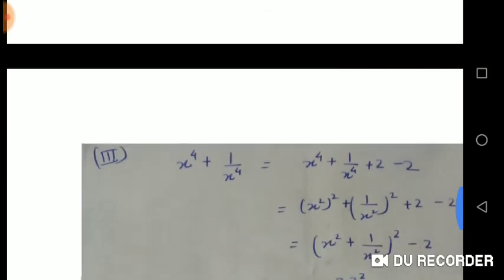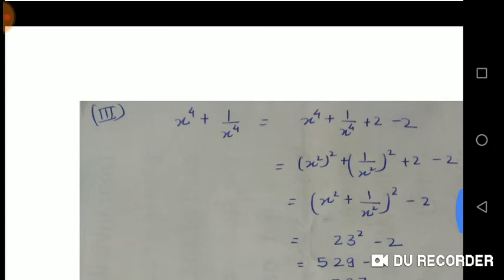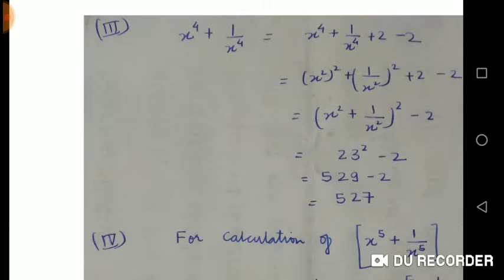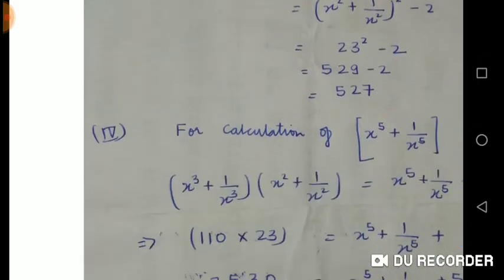Then we move to the next part, which is x⁴ + 1/x⁴. Simply I added 2, negative 2. Why? Because I need to make it (x² + 1/x²)². We know the value of this expression from our last part, which is 23. When I solve it, the answer will come as 527.